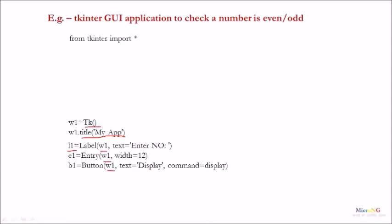For the label we are assigning the text as 'Enter the number'. For the Entry widget, the name of the Entry widget object is e1 and its width is specified as 12.